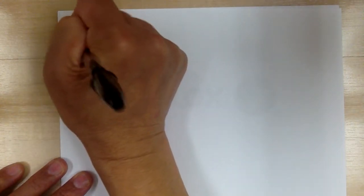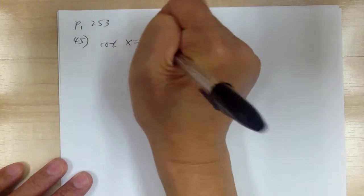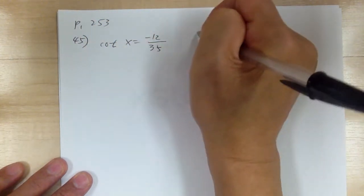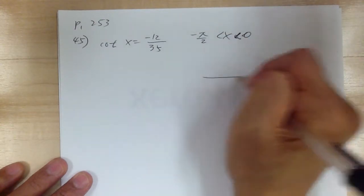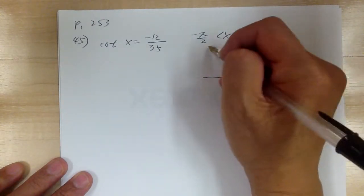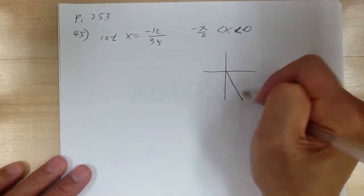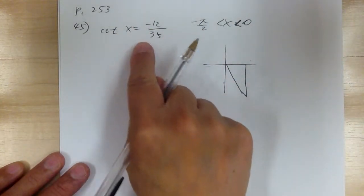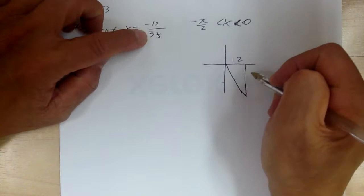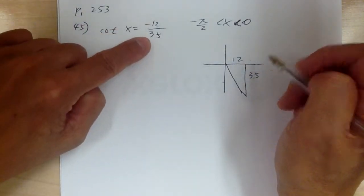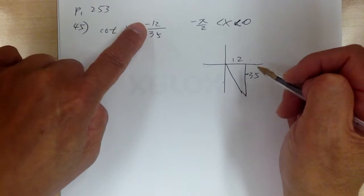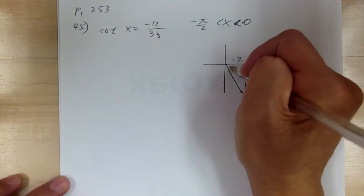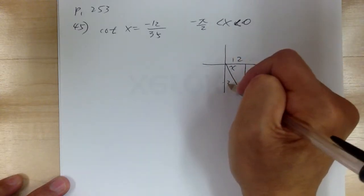Let's go to number 45. You have cotangent of x equal to negative 12 over 35, and the angle is between negative pi over 2 and 0. So this is quadrant 4. Cotangent is cosine over sine, so cosine is 12 and sine is 35. The negative has to go with sine, which is 35. Then using the Pythagorean theorem, you get the hypotenuse equal to 37.